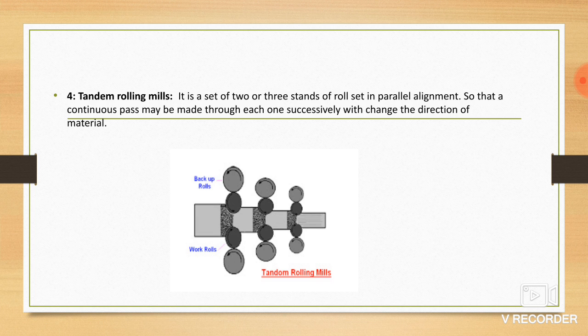Fourth, tandem rolling mill. It has two or three stands of rolls set in parallel arrangement, so that continuous passes may be made through successively without changing the direction of material. This is the diagram of tandem rolling mill.